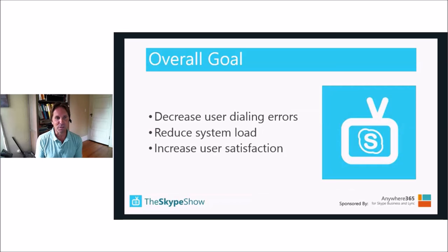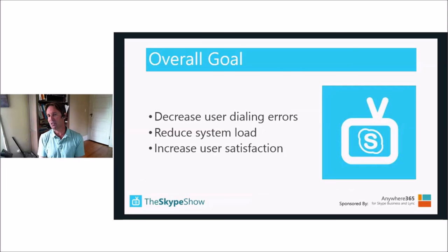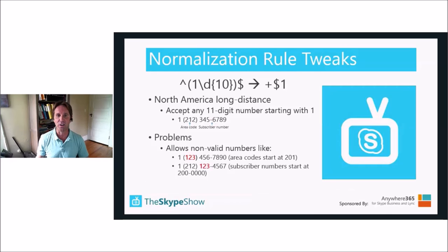The overall goal is to decrease user dialing errors, which will reduce system load and increase user satisfaction. Most of the things covered are very simple tweaks you can make to your system that can make a huge difference to how users interact with it. The first topic is simple normalization rule tweaks.